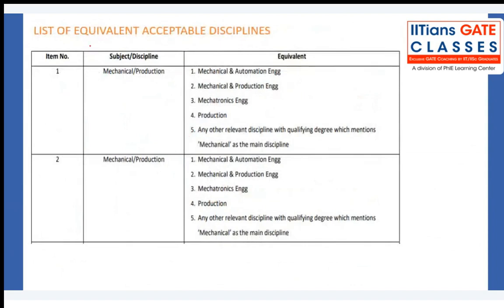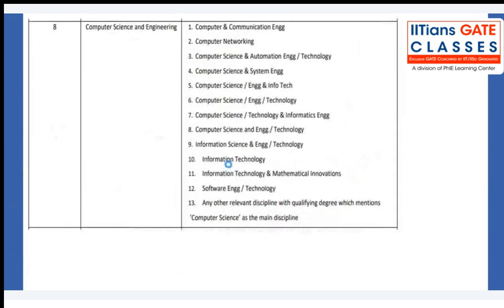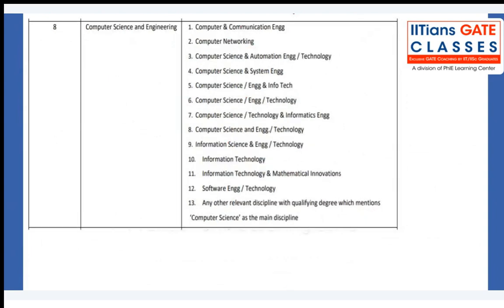Regarding equivalent acceptable disciplines: for Mechanical or Production, equivalents include Production and Automation, Mechatronics, and Production Mechanical. For Aeronautical, equivalents include Aerospace, Avionics, and related disciplines. For EC, equivalents include Electrical, Instrumentation, and related fields. CSC candidates can also refer to the equivalents list. These equivalents apply to the respective serial numbers under Project Engineer 1.